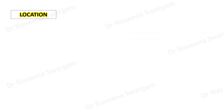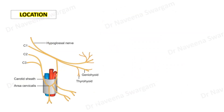Let's see the location of ansa cervicalis. It is situated in front of the carotid sheath, within the carotid triangle of the anterior triangle of the neck.